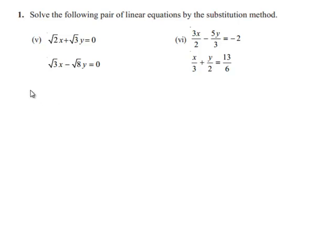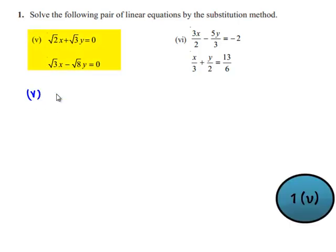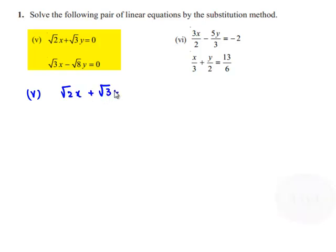Now, coming to the fifth problem which is root 2 times of x plus root 3 times of y is equal to 0. Let this be equation number 1, and root 3 x minus root 8 y is equal to 0. Let this be equation number 2.